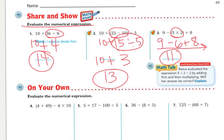I'm going to do the first four problems with you, then I want you to do the rest on your own — you can work with a partner. Once you reach the end of page seventeen, check with a partner to make sure you have the right answers, then go on to the second video to help with homework. Let's do these together. Do parentheses first: four plus forty-nine equals fifty-three, minus four times ten.